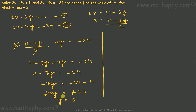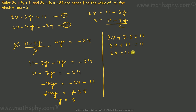Now let's substitute the value of y back into the first equation. So 2x plus 3y equals 11, and y is 5, so 3 times 5 gives 2x plus 15 equals 11. Therefore 2x equals 11 minus 15, so 2x equals negative 4, and x equals negative 2. So I have x equals negative 2 and y equals 5.